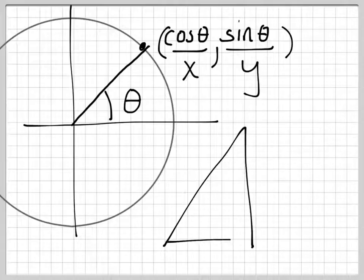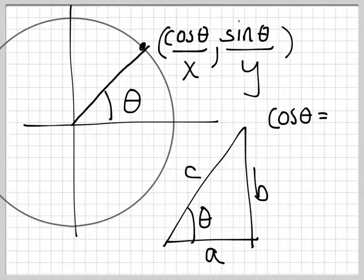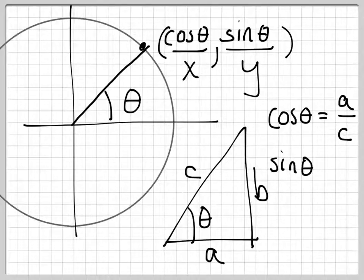And we just saw that if you have a triangle that has the same angle there, that's also theta, and I label the triangle A, B, and C, we saw that cosine of theta is just the ratio of side A to side C, and that sine of theta is just the ratio of side B to side C.